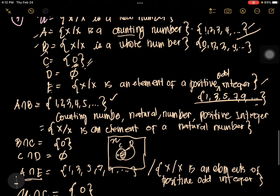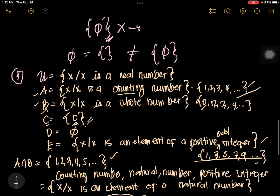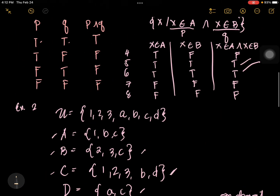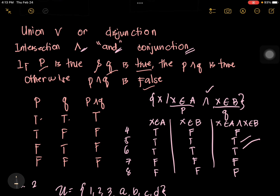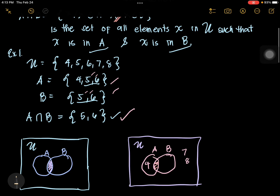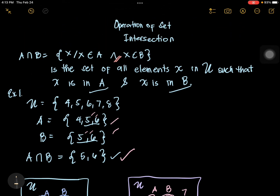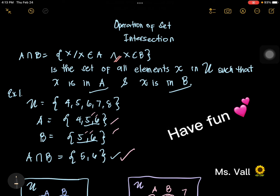So this is our example number 3, example number 2, and the explanation in connection to the conjunction symbol. I want you to really have an in-depth understanding of the definition itself — the definition of each term and concept in mathematics is very important. This is how we explain the definition in connection to the intersection symbol, the Venn diagram, and the definition of intersection. That's all for intersection. Let's have our next operation of sets.